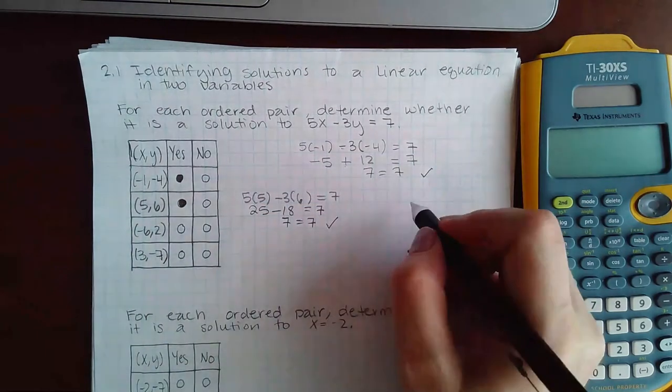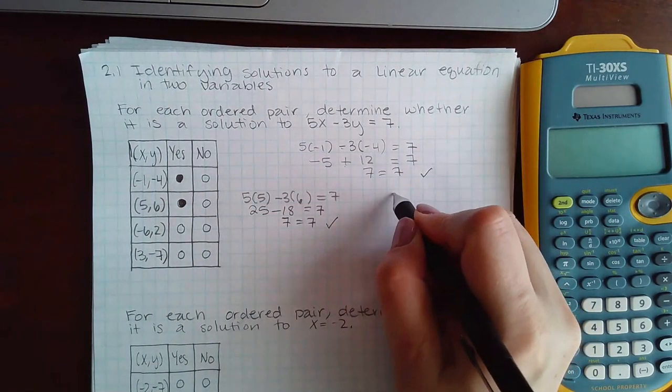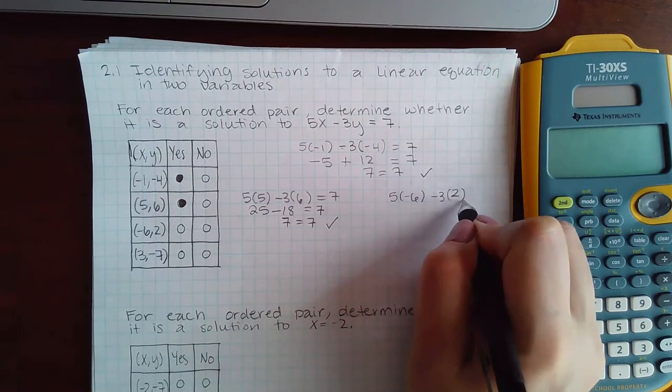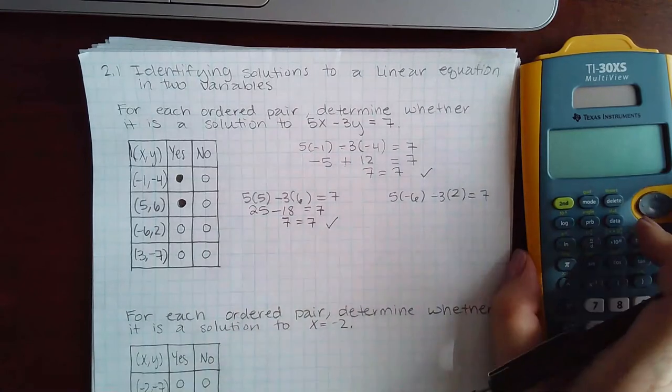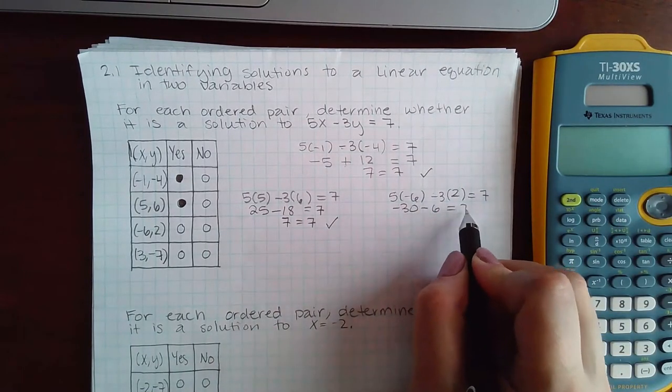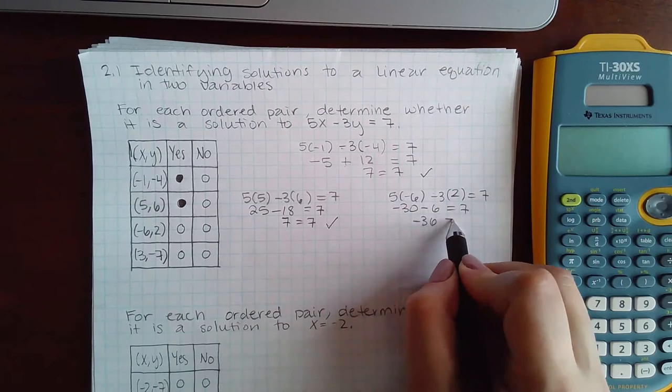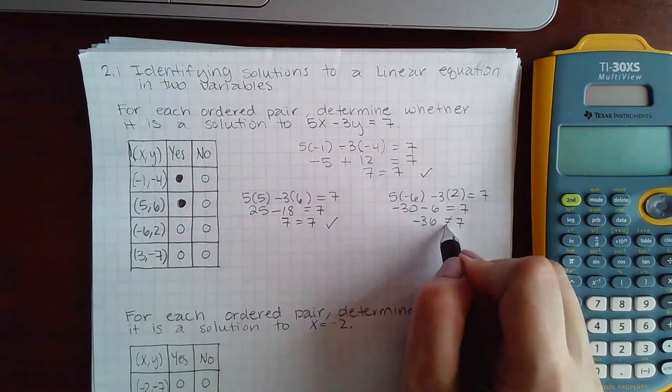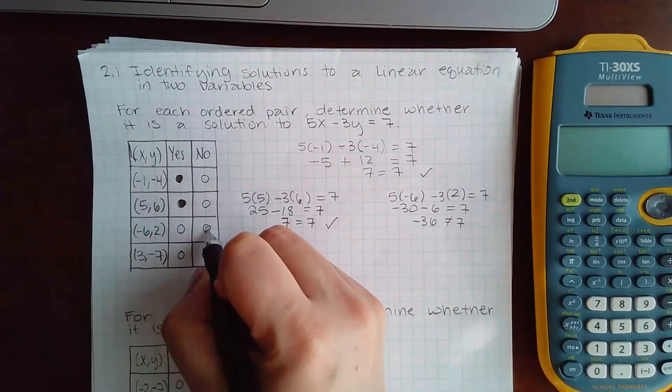Now we'll try 5 times negative 6 minus 3 times 2. We get negative 30 minus 6, which is negative 36. And this is not equivalent. When it's not equivalent, we select no.